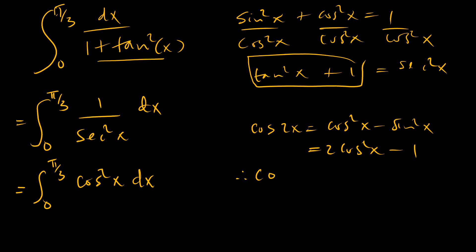Therefore, cosine squared x is equal to cosine 2x plus 1, all over 2.